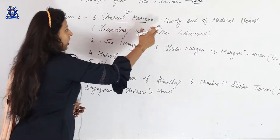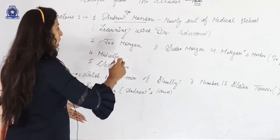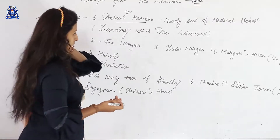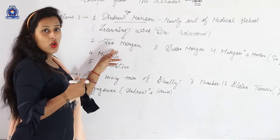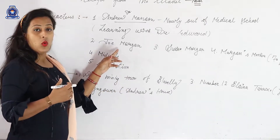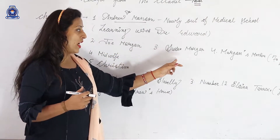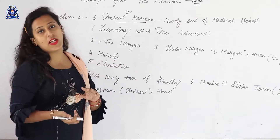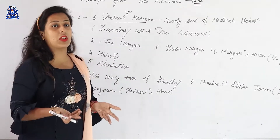Dr. Andrew Manson has just passed out from medical school and is learning with Dr. Edward. The second character is Joe Morgan. Joe Morgan's wife is Suzanne Morgan, and then there is Morgan's mother. These are four main characters, with one or two additional characters who have very limited roles.